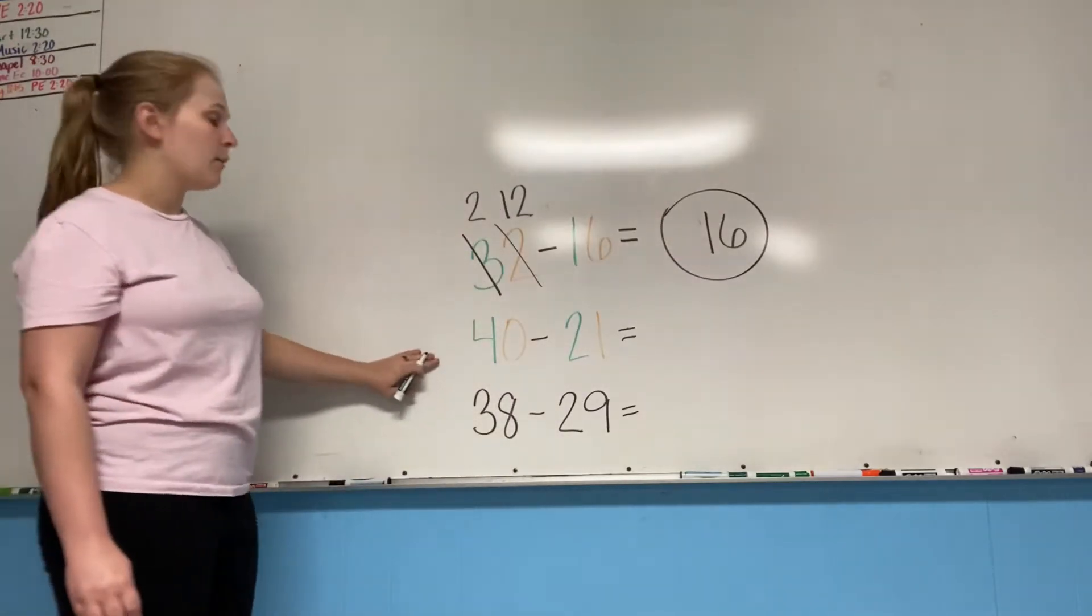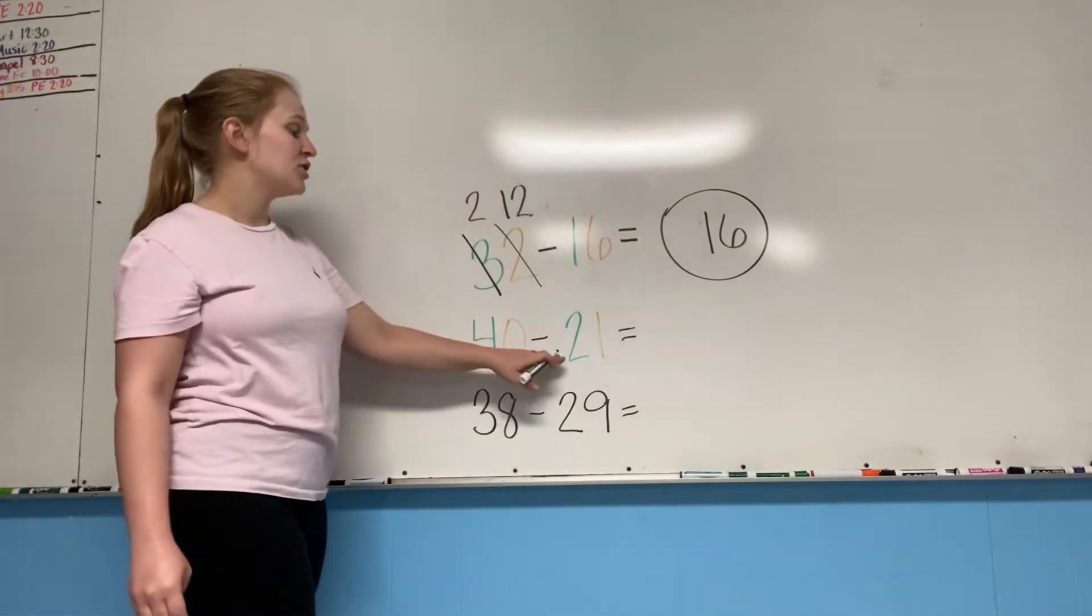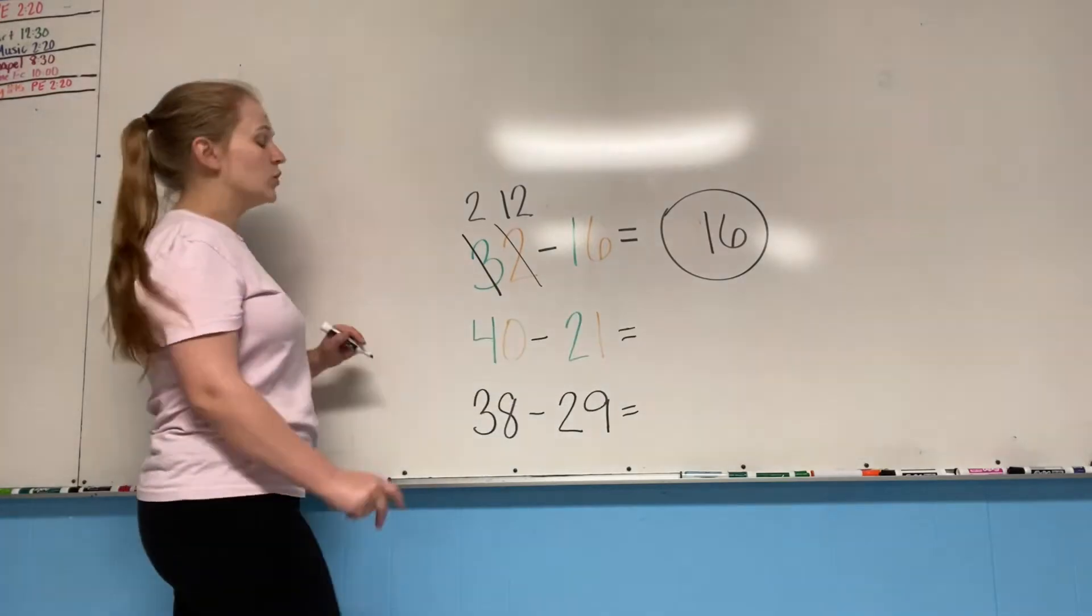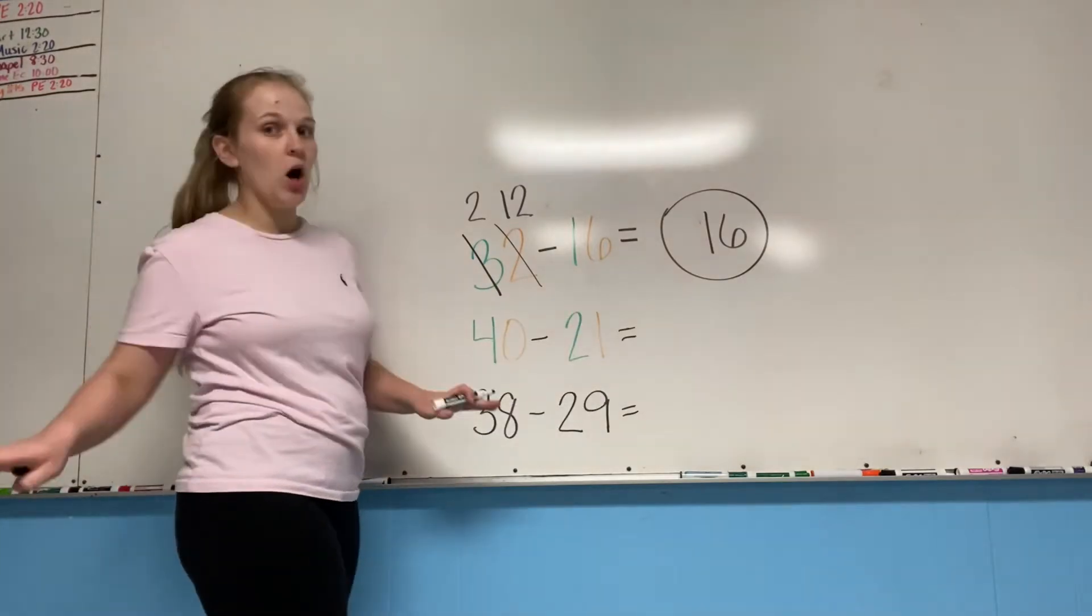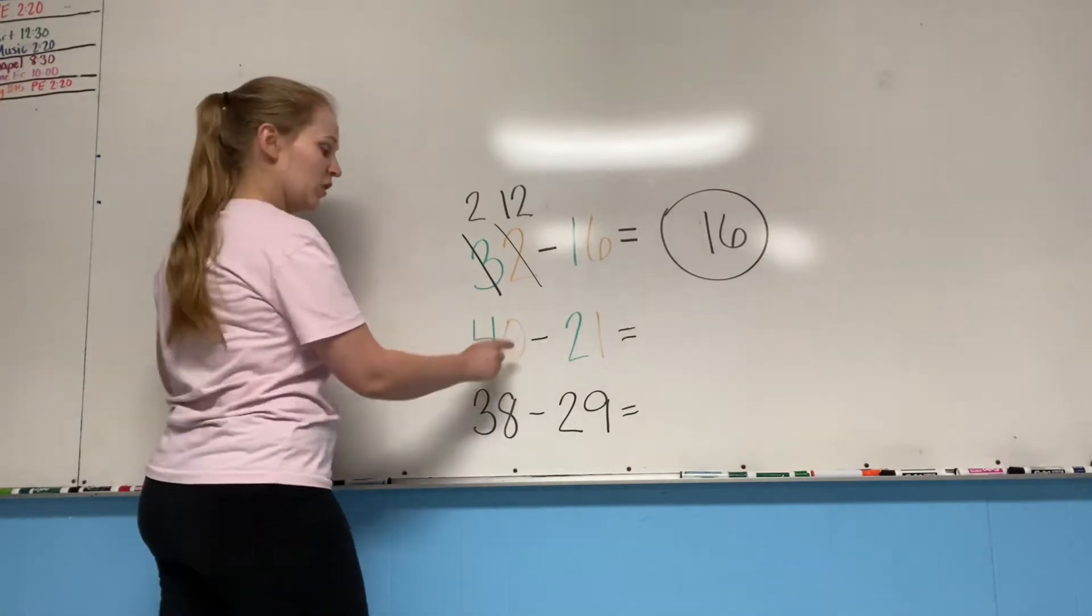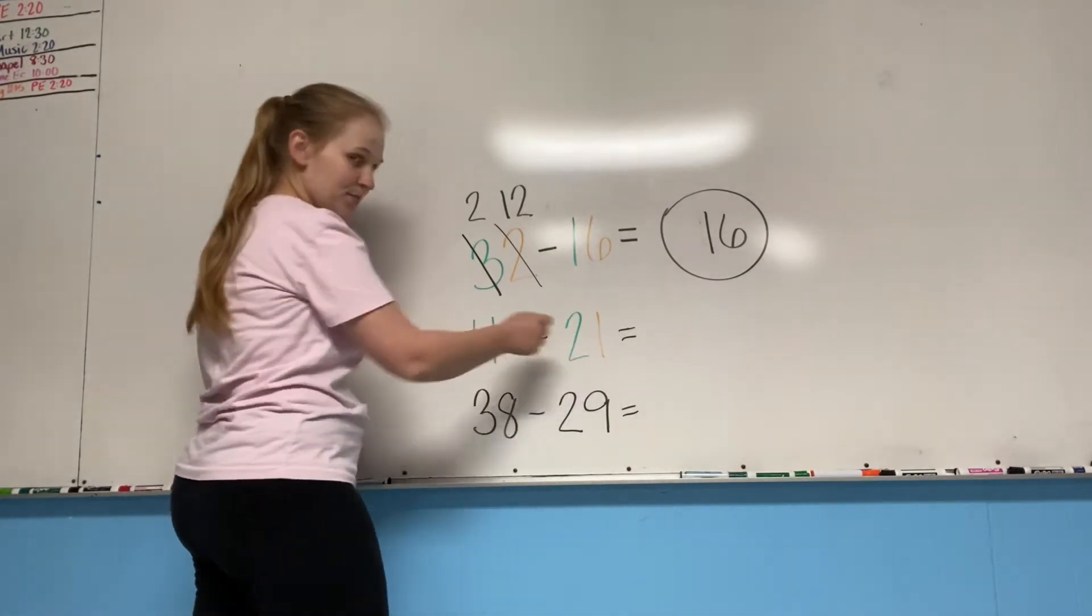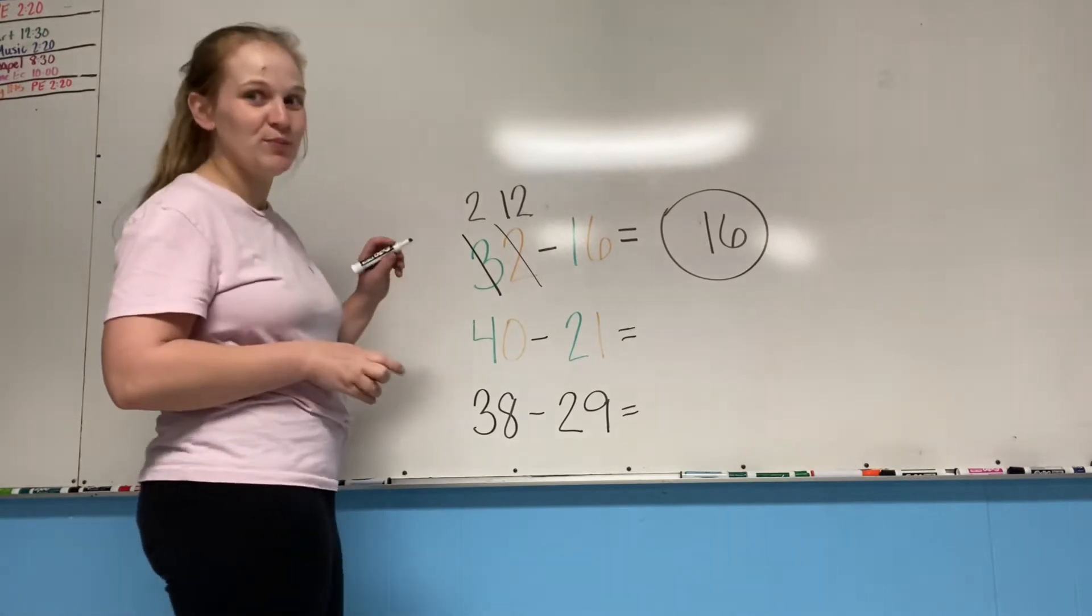So now this next problem, 40 minus 21 equals what? Let's start with our ones place. Remember, we always start with our ones place. What is zero minus one? Can't do it. We're going to have to borrow.